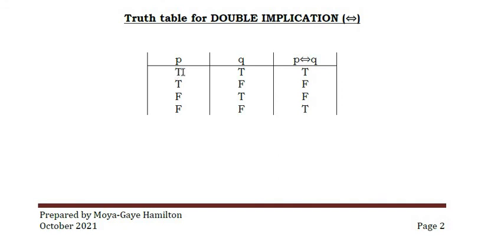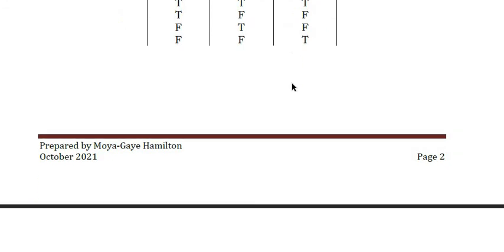For example: I will give you one million dollars if and only if I win the lotto. If I win the lotto, you'll get the one million dollars. If I don't win the lotto, you won't get the one million dollars. It can't be a situation where I win the lotto and still don't give the one million dollars — that would mean my promise is not true.